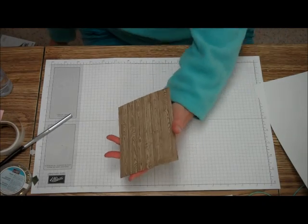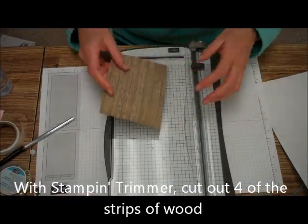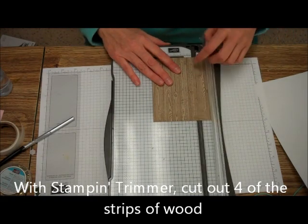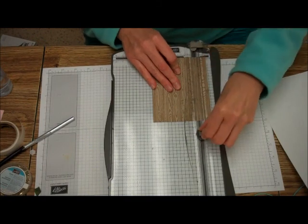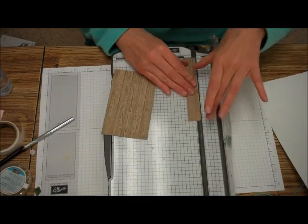Now what we're going to do is take our stamping trimmer and line up those wood slats. And we're going to cut them just like that.